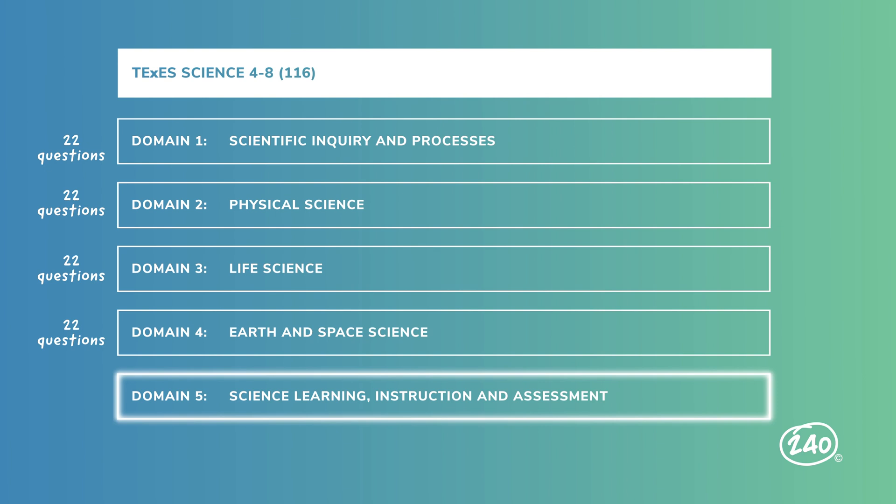We're down to our last domain, domain five, which is science, learning, instruction, and assessment. Instead of the 22 questions that each of the other domains contribute, this domain only sends about 12 questions your way. That doesn't mean you don't have to learn this stuff — it just means maybe don't spend as much time on this as you do on the other domains. But still, let's dig into it.